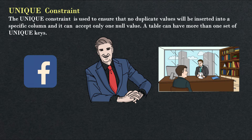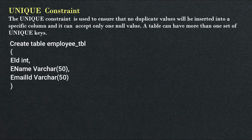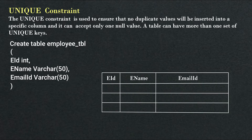Let me show you through a table how exactly unique constraints work in SQL Server. Create table employee_tbl — within the brackets: employee_id int, employee_name varchar(50), email_id varchar(50). Here we set a unique constraint on email_id: UNIQUE. I have created the employee table with three columns: employee_id, employee_name, and email_id. After executing this query, the table looks like this — right now there is no value inserted in the table, it's totally blank. And I have used email_id as a unique constraint here.